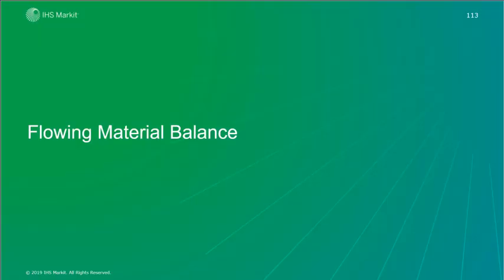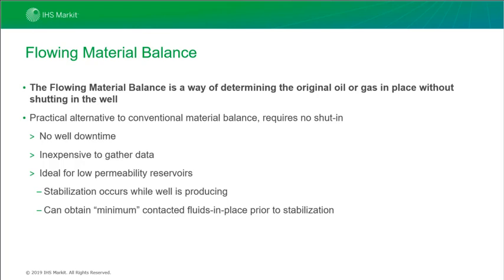Moving on to the flowing material balance, also known as the FMB. The flowing material balance is a way of determining the original oil or gas in place without shutting in the well. The FMB is a practical alternative to conventional material balance as it does not require the well to be shut in and so there's no well downtime. The data is very inexpensive to collect as it should be collected as part of good production practice. The flowing material balance also works well for lower permeability systems because when we flow a well for a reasonable amount of time, stabilisation is reached and so we don't need to shut in the well and lose production. Even if the reservoir is not in a stabilised condition, the FMB can provide an idea of the minimum gas or oil in place and current contacted drainage area.